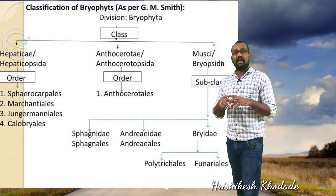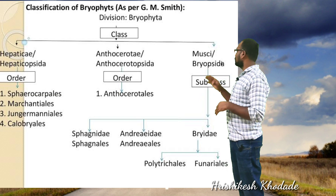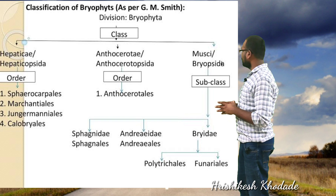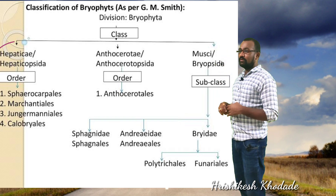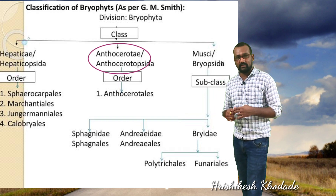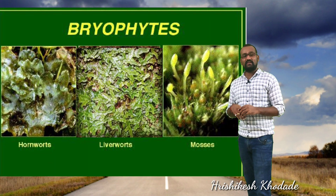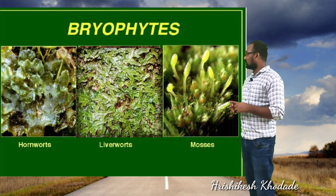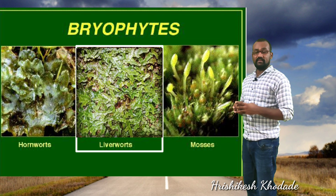Smith divided bryophytes into three different major groups: liverworts, hornworts, and mosses. Liverworts are known as Hepaticae, hornworts as Anthocerotae, and mosses are the Musci. We will be discussing the key features of each class of bryophytes in detail.